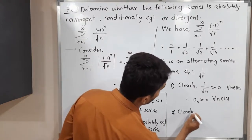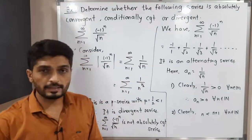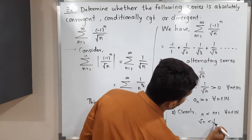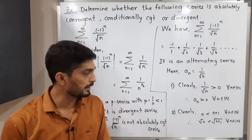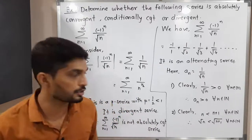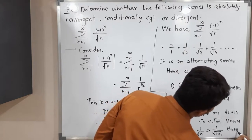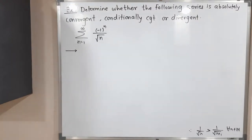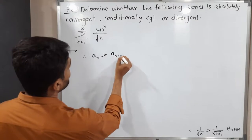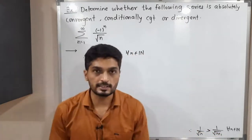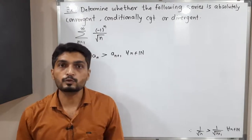For the second condition: clearly n < n+1 for all n ∈ ℕ. Taking square roots: √n < √(n+1). Taking reciprocals reverses the inequality, so 1/√n > 1/√(n+1) for all n ∈ ℕ. Therefore a_n > a_(n+1), which means a_n is a monotonically decreasing sequence, so the second condition is satisfied.